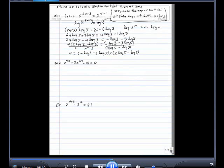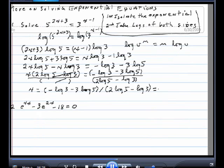Negative the log of 3 minus 3 log of 5 close divided by open 2 log 5 minus log 3 close. Hit enter and I get negative 2.795 which is approximately equal to negative 2.8.